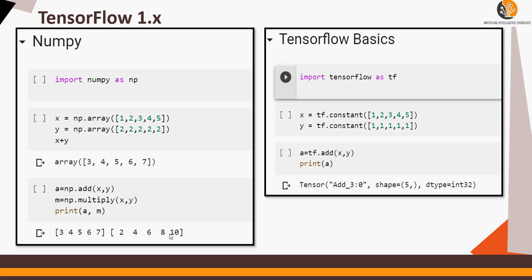In TensorFlow 1.x—this is not valid for TensorFlow 2.0—I use import tensorflow as tf, and then instead of arrays, I call it as constants. It's an array. Now you see here I used the TensorFlow function to add x and y. When I print a, that means the addition, you see that it gives a name, it defines the shape—that means 5 comma 0—and then data type is int32, but you do not see a result. This is not TensorFlow 2.0, this is TensorFlow 1.0, and you are not able to see the result directly.